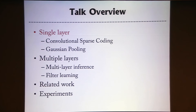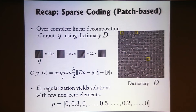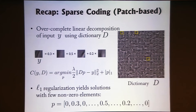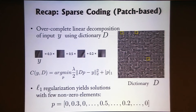Let's look at a single layer of the model. It's really a sparse coding model — specifically patch-based sparse coding. In a patch-based version, you have an image patch you assume can be represented as a linear combination of a small number of prototypes from a big dictionary. The cost function has a sparse vector p (mainly zeros, with a few non-zero elements) multiplied by dictionary matrix D to reconstruct input patch y — an L2 reconstruction constraint plus an L1 sparsity penalty on the coefficients. At training time, you also estimate the dictionary elements.